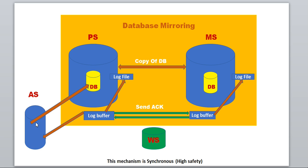Now we will see the complete flow — how the request comes from the application server to the principal, and how the logs move from the principal to the mirror server. From the application server, whenever a request is processed to the principal database, on the principal server we have a log buffer. The log buffer plays a critical role here — it writes a log to the log file on the principal database.